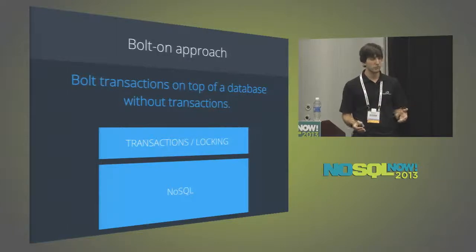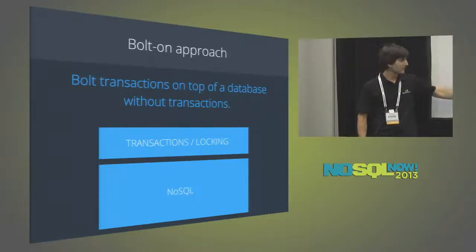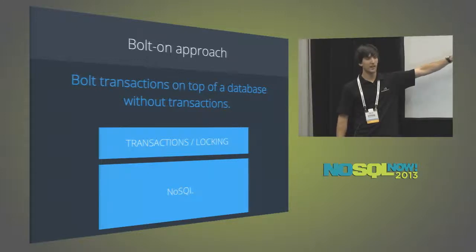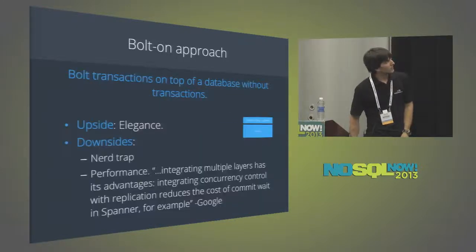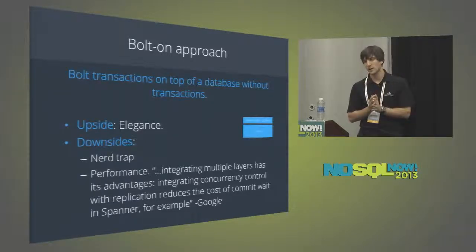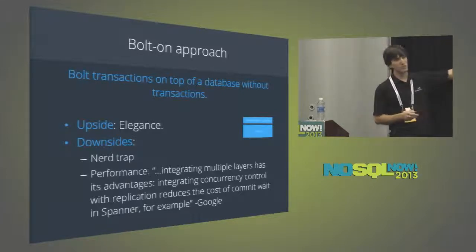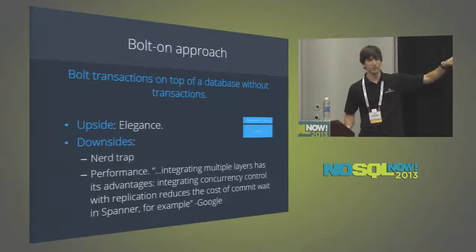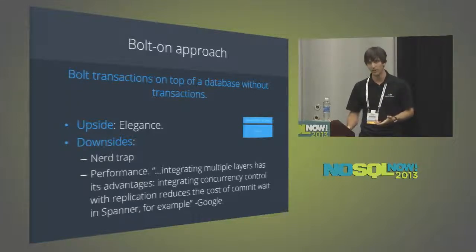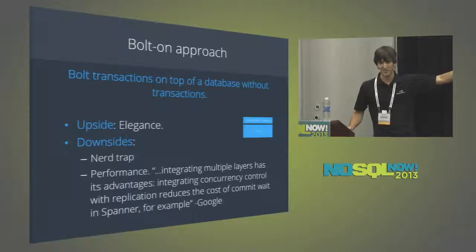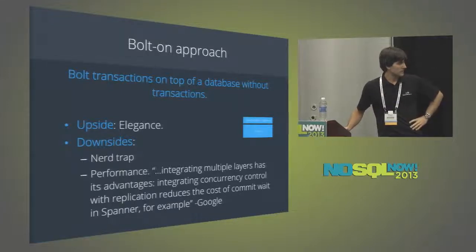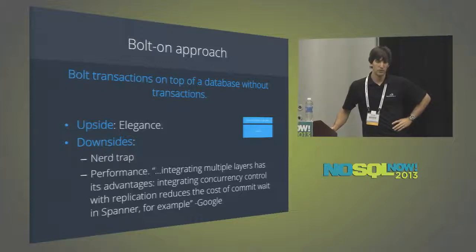There are a few high-level system architectural approaches to solve this problem. The first is what I call the bolt-on approach: take a traditional NoSQL database with no transactions and bolt on some sort of transaction or locking mechanism on top. The upside is elegance — it sounds wonderful if it works. The downside is what I call a nerd trap. I've personally spoken with several companies that have had engineers working on a project like this for years to no avail. And Google speaks to the performance downside: they built a product this way called Megastore, then rebuilt another called Spanner.